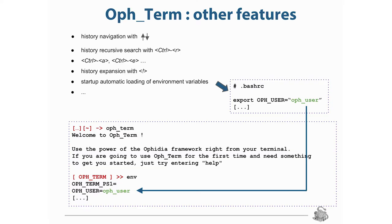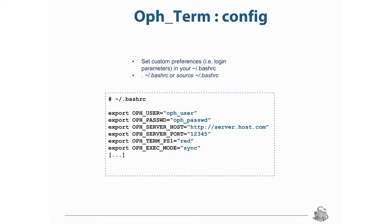You can define the OPH_term environment variables in order to avoid retyping them every time you want to access the terminal. As you can see, in the terminal environment we have already defined these variables. In your .bashrc file, you can define all the connection information: the username, login name, password, server host, port, and so on.